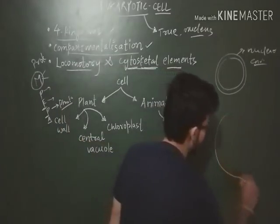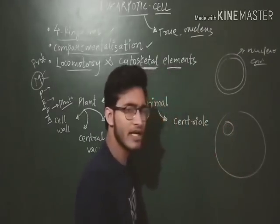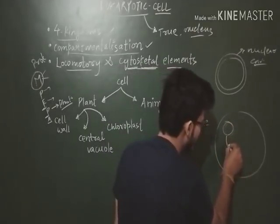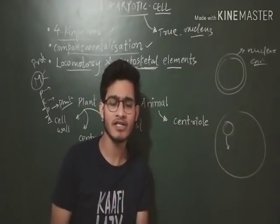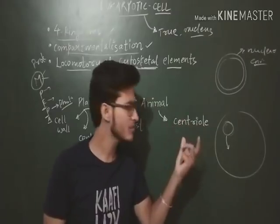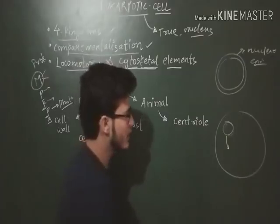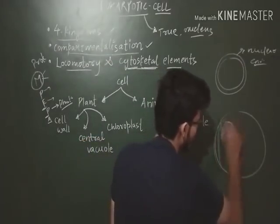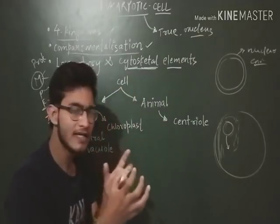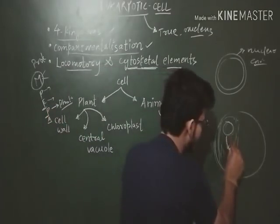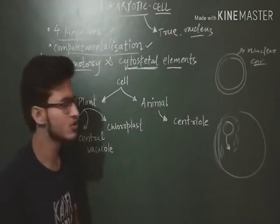For example, consider an organelle that needs to move from one side of the cell to the other but does not have any locomotory appendage. There are rigid structures in the cytoplasm which allow this organelle to move from one place to another. So cytoskeletal elements provide both strength and motion.